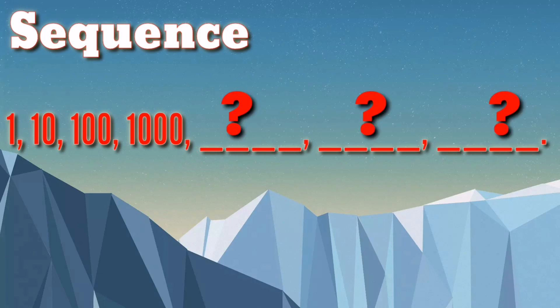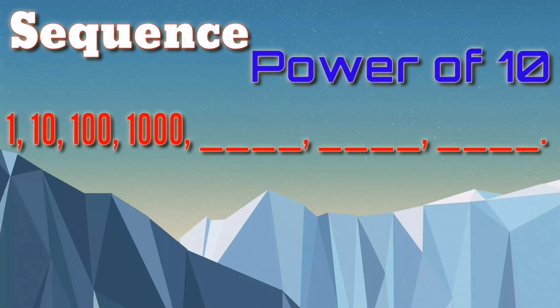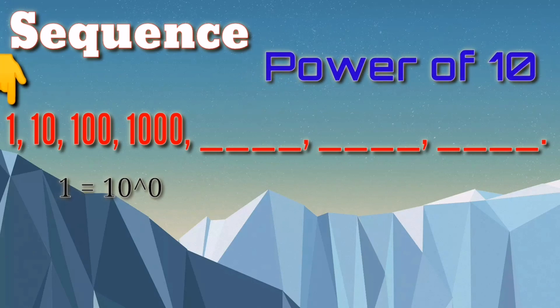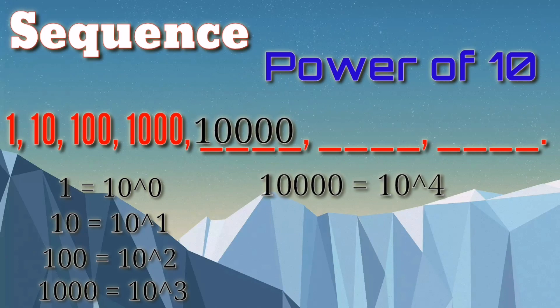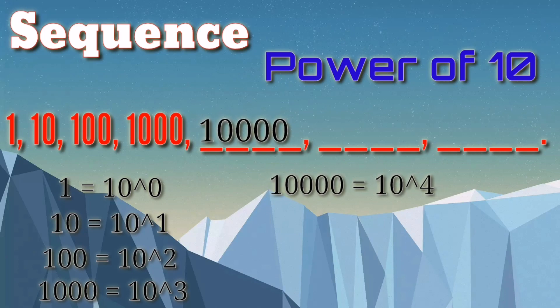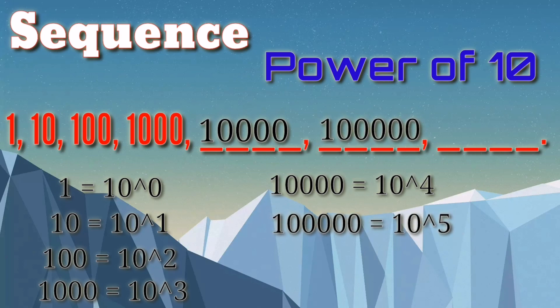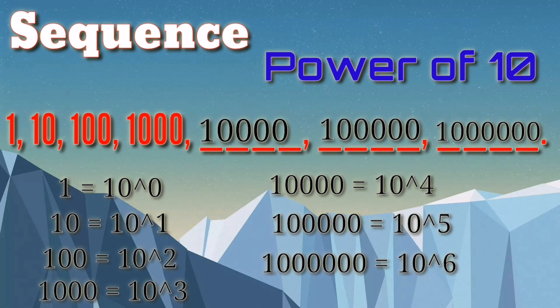Looking at the set of numbers, it can be observed that each term is a power of 10. 1 equals 10 raised to 0. 10 equals 10 raised to 1. 100 equals 10 raised to 2. And 1000 equals 10 raised to 3. Following this rule, the next 3 terms are 10 raised to 4, which equals 10,000. 10 raised to 5, which equals 100,000. And 10 raised to 6, which equals 1,000,000.